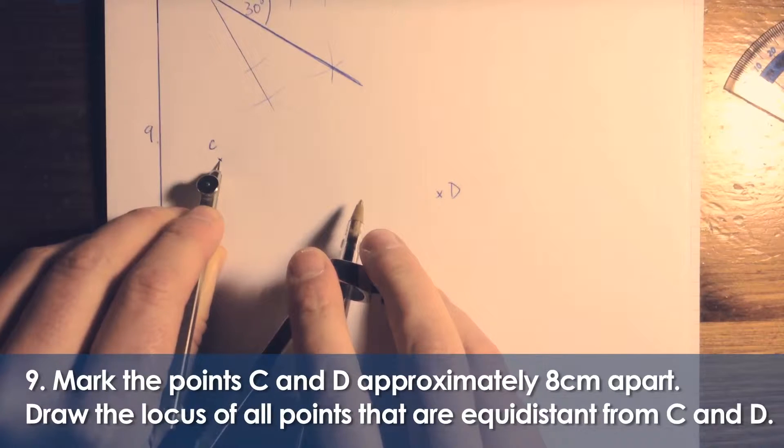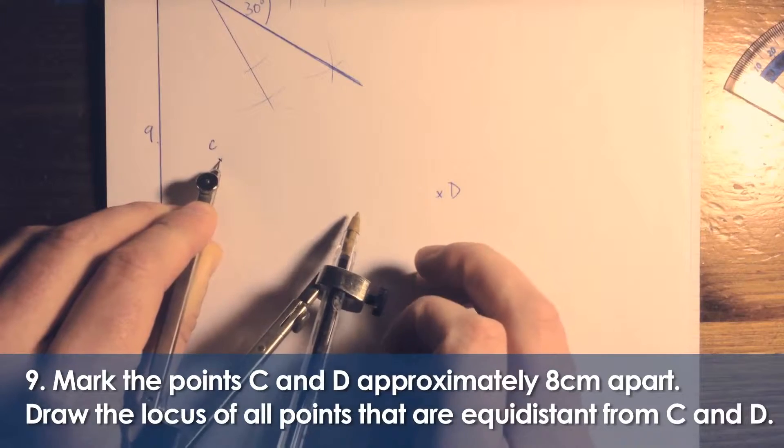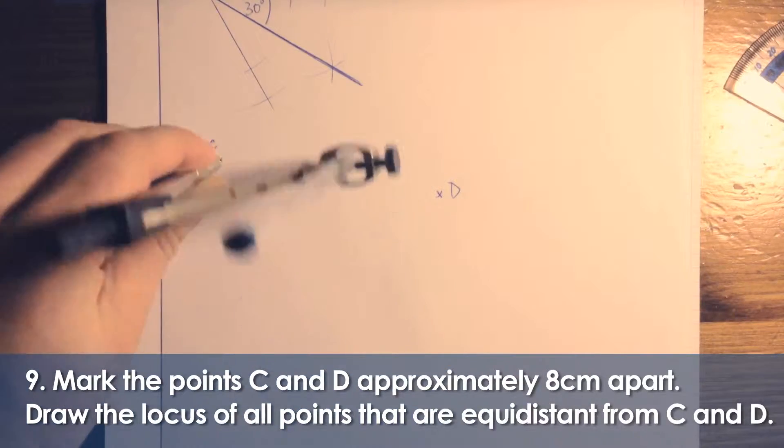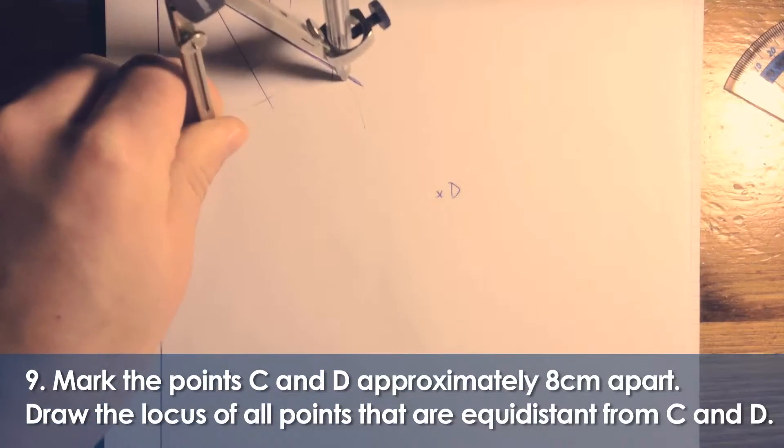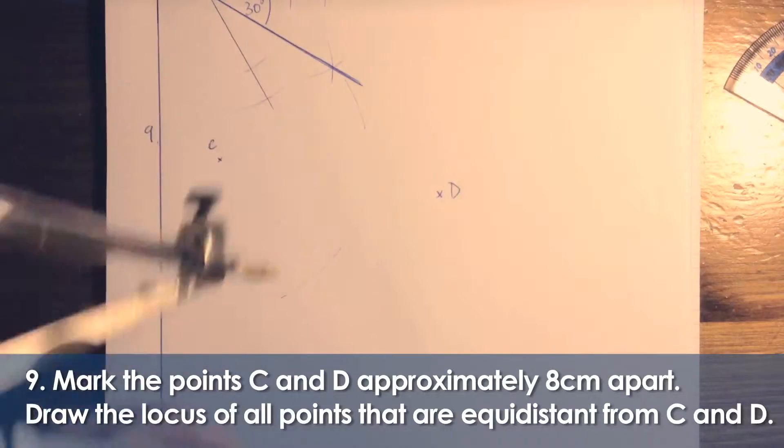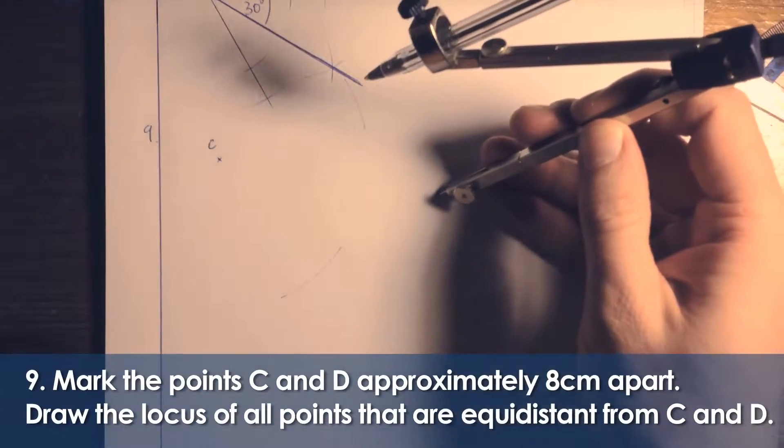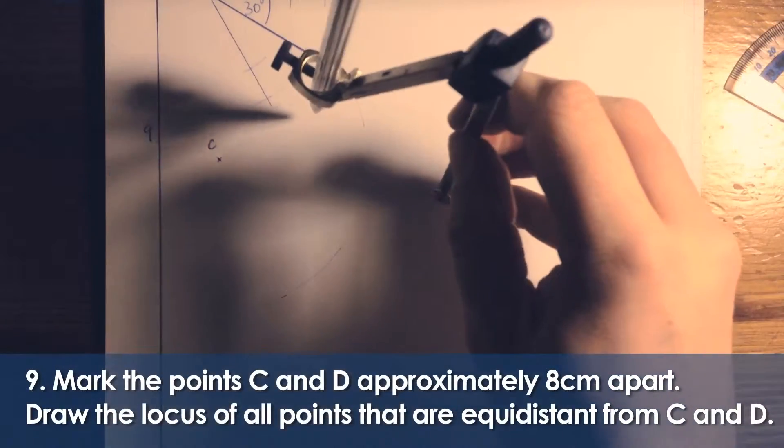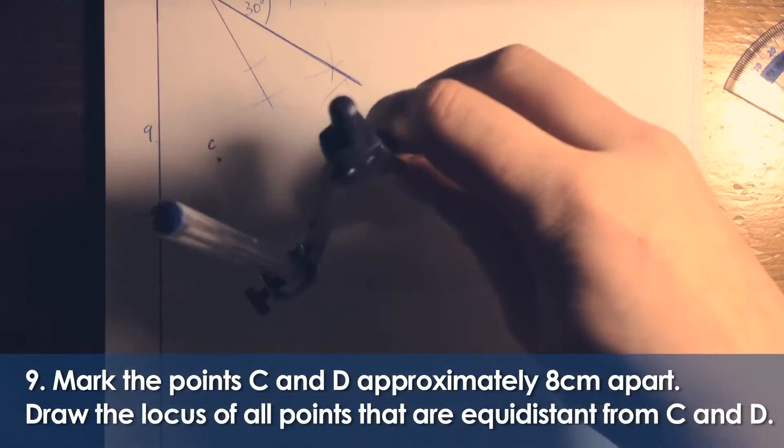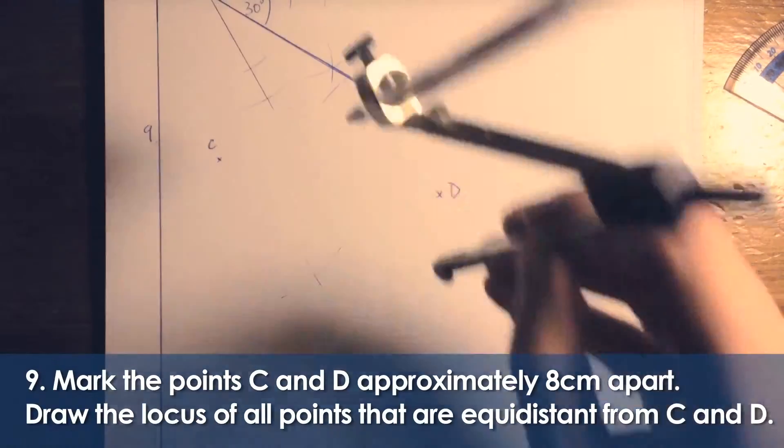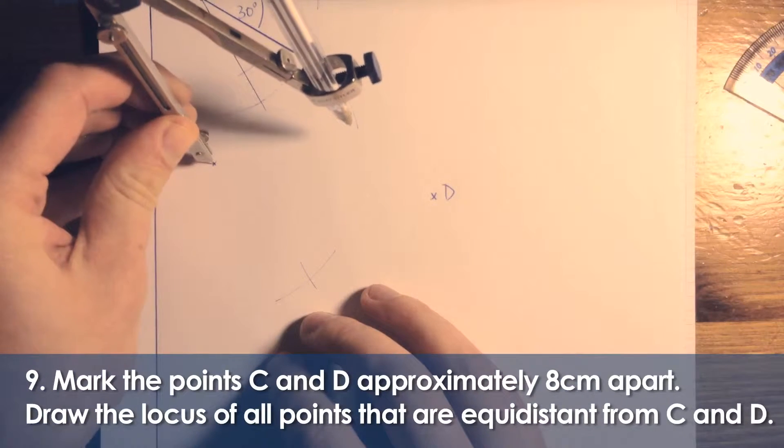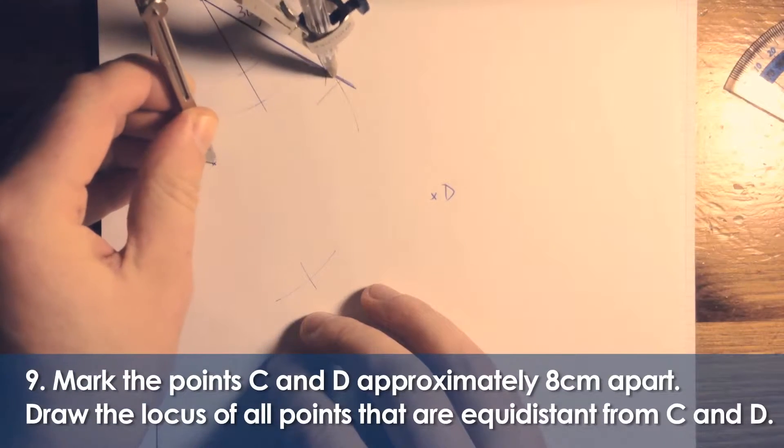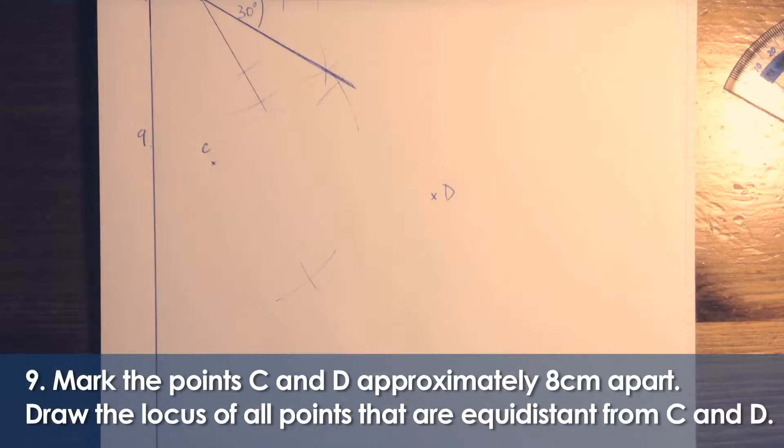For this one, to construct a perpendicular bisector, I'm drawing the locus of points that are equal distance from C and D. It effectively is a perpendicular bisector, but not specifically named that. I should have taken that C arc a bit further, and obviously I'm going into my diagram for question 9, question 8.